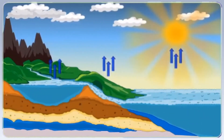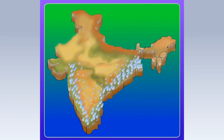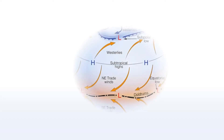Moisture or water vapour is always present in the air. The amount of moisture in the air rises when the sun's heat converts water from the oceans, seas, rivers and lakes into water vapour. This is the reason why coastal areas get more rainfall than places away from the coast.